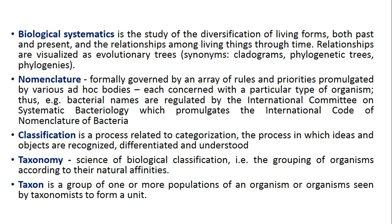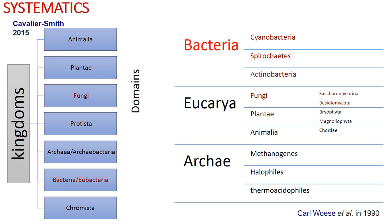By 1998, Cavalier-Smith had reduced the total number of kingdoms from eight to six: Animalia, Protozoa, Fungi (including Glaucophyta), red and green algae, Chromista, and Bacteria. He and his collaborator revised the classification in 2015. In this scheme, they reintroduced the division of prokaryotes into two kingdoms: Bacteria (equals Eubacteria) and Archaea (equals Archibacteria), based on the consensus in the taxonomic outline of bacteria and archaea and the catalog of life.